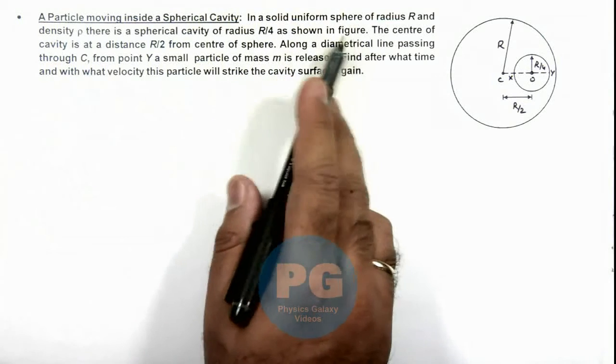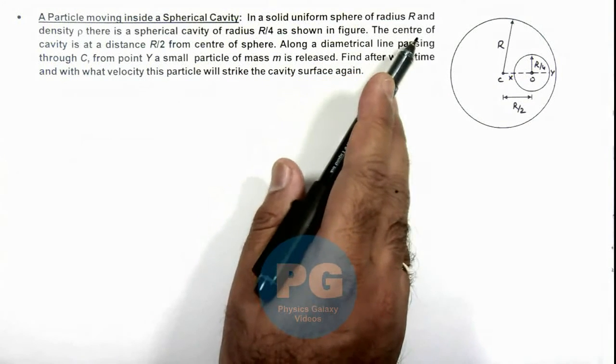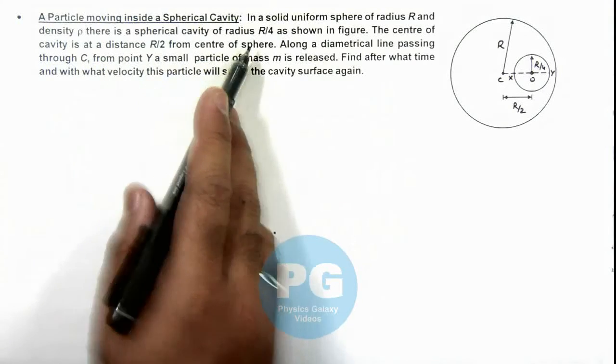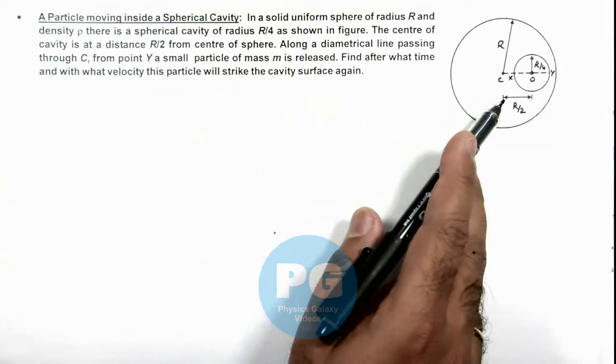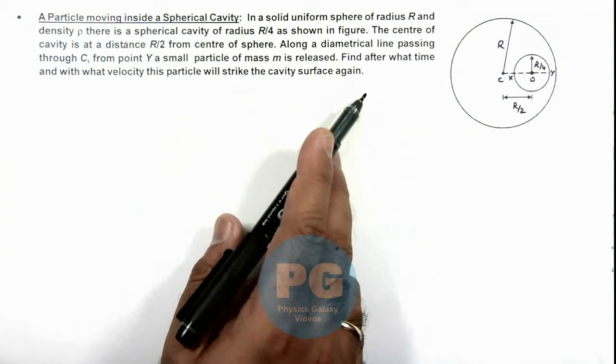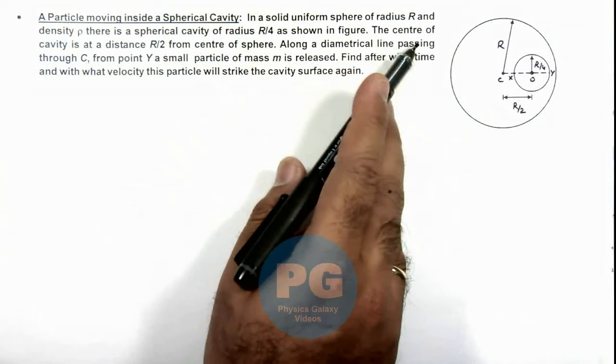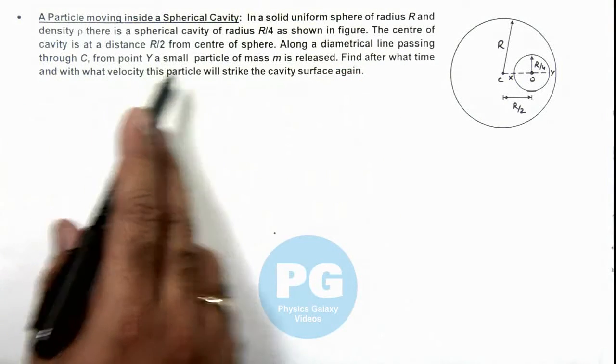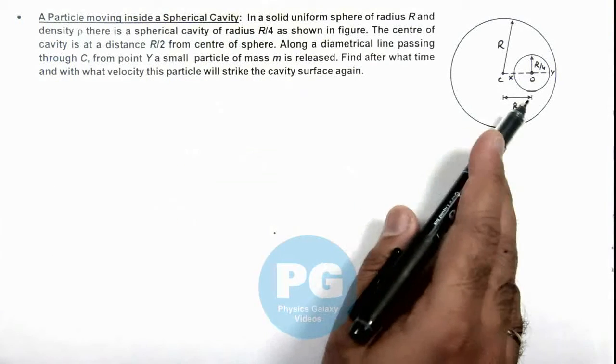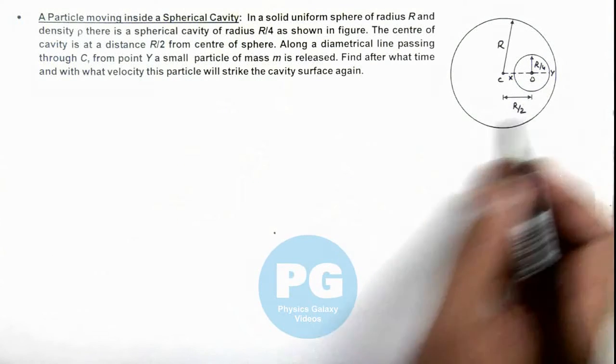a solid uniform sphere of radius R and density ρ has a spherical cavity of radius R/4, as we can see here in the figure. The center of cavity is at a distance R/2 from center of sphere; this distance OC we are given as R/2.